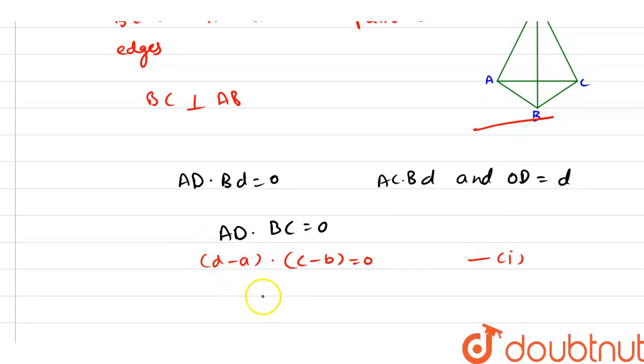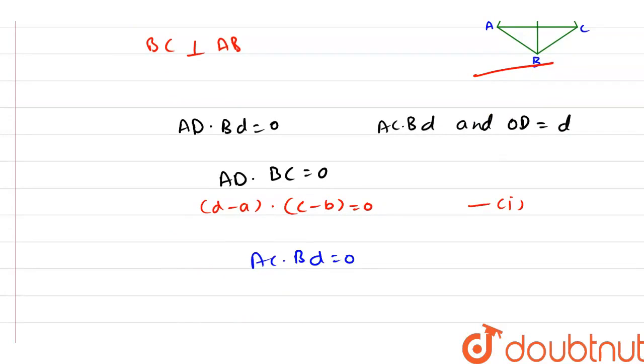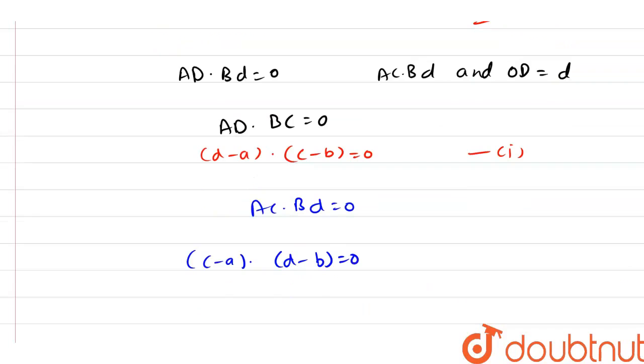Here we have that AC dot BD is equal to 0. So, AC is C minus A dot BD is D minus B, and that is equal to 0. Name this equation as equation number 2.